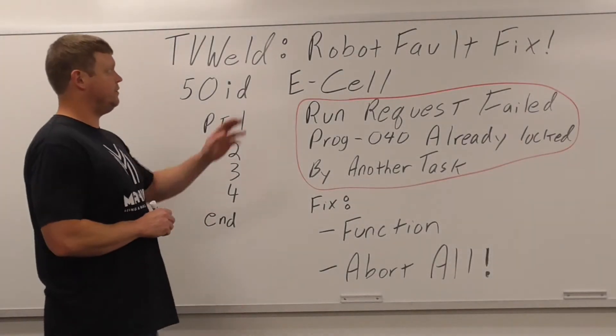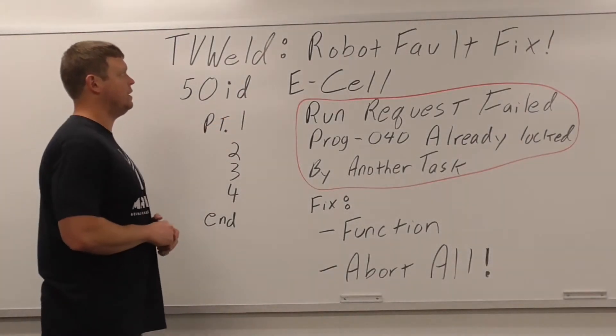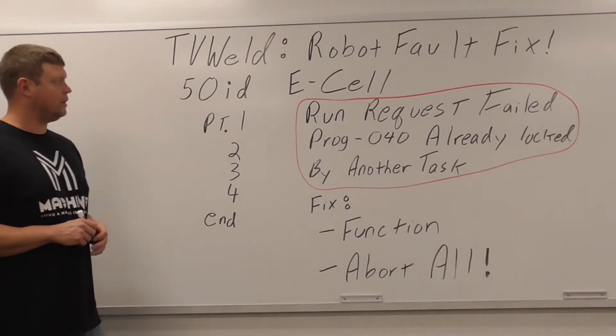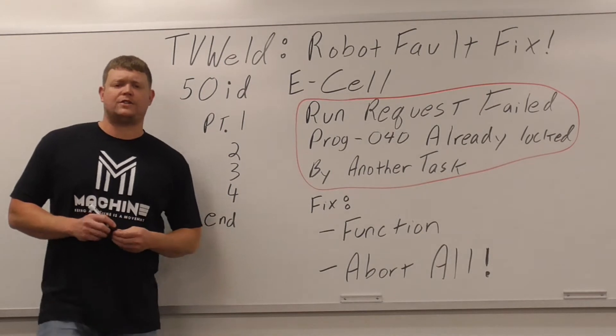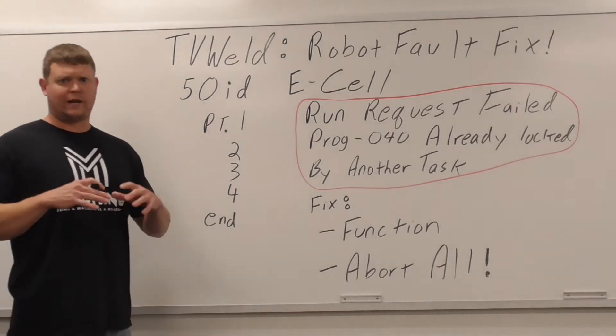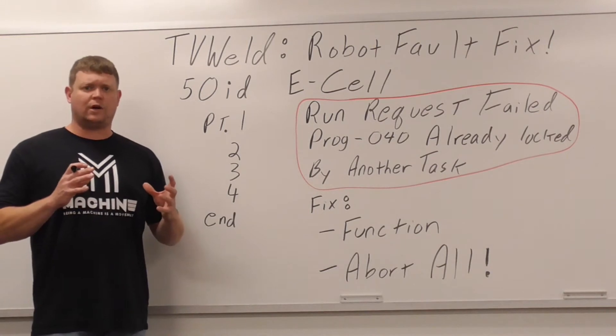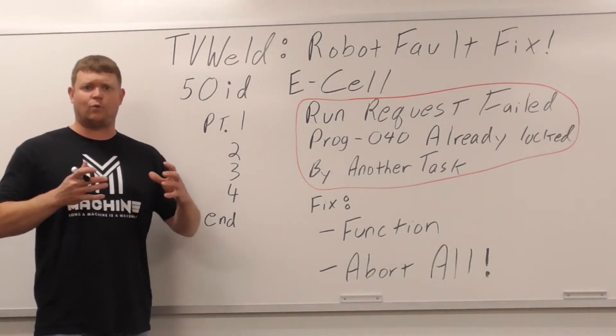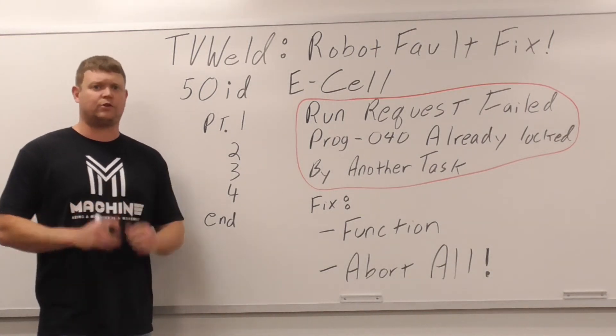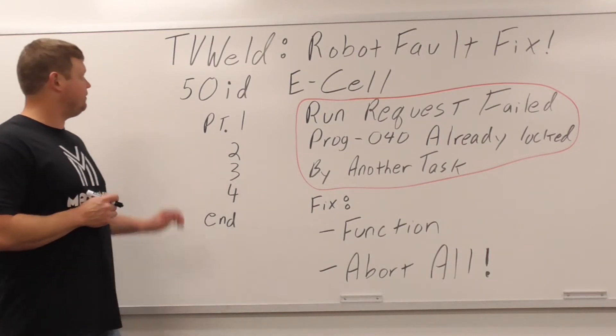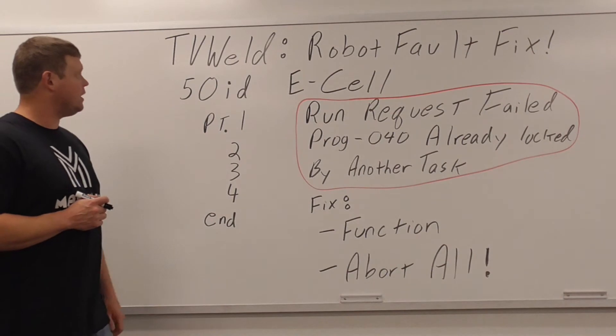What we're going over today is a robot fault fix, and what we're working on is a FANUC 50ID E-Cell. It's basically a robot cell that we use for education, so it's slowed way down. It's a smaller robot and it's all contained. We can maneuver it to different facilities if we want. It's got wheels so you can just roll it out the door into a trailer and move to another facility and do a training.